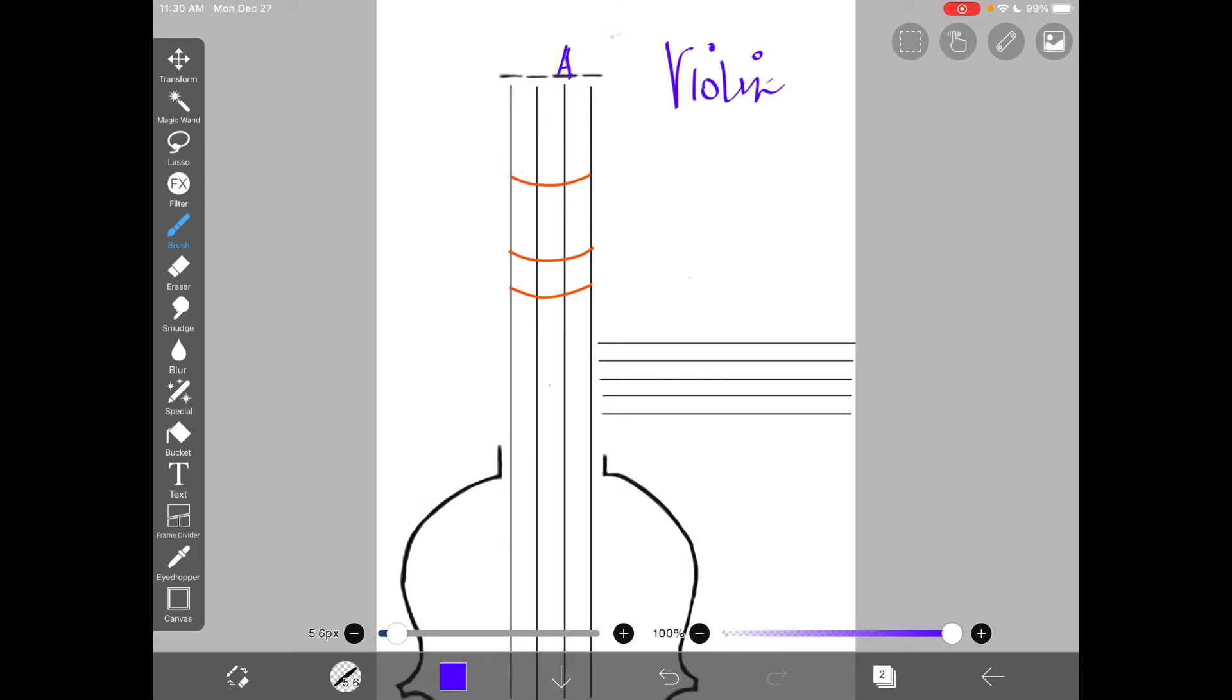There's your open A, and that's represented by the note, the A note. So the next note up would be a B, and that's played first finger on the A string. That's your B note.